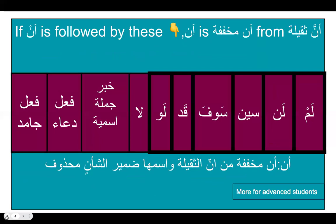In summary: every student of Quran must familiarize themselves with Lam, Lan, Seen, Sof, Qad, and Law. If you see An followed by any of these, call it An al-Mukhaffafah. For advanced students, also commit to memory the last four cases: An before La-naqiyyah, An before Fa'il Dua, An before Fa'il Jamid, and An beginning the khabar of a jumlah ismiyyah — in all these cases it is An al-Mukhaffafah min Anna-Thaqeelah. I hope you find this session beneficial.